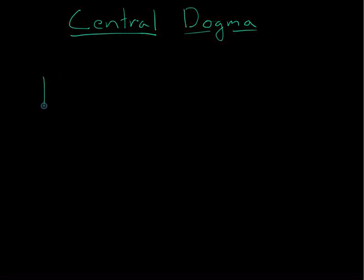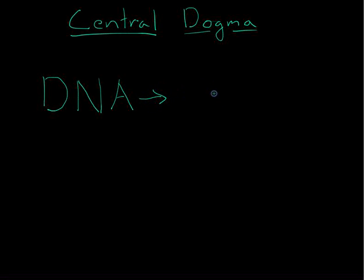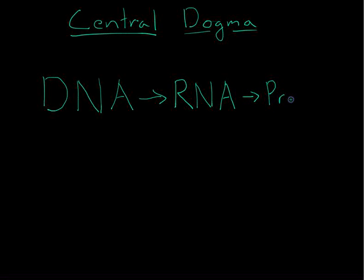So the central dogma says that DNA — deoxyribonucleic acid — makes RNA. Really, it forms a template for RNA, which then forms a template for protein. And this may look familiar to you already. DNA makes RNA makes protein.